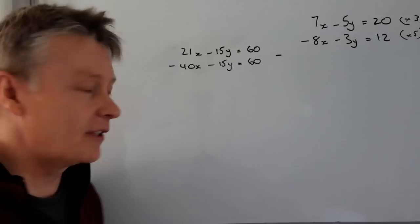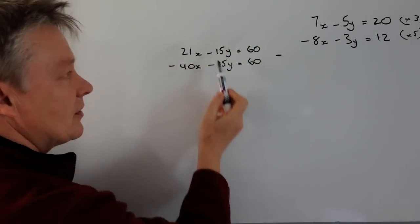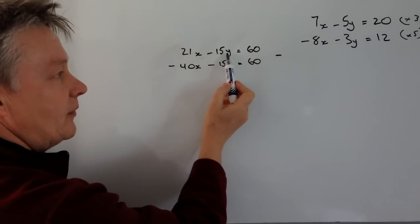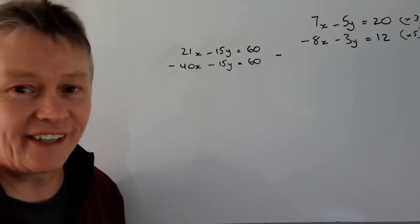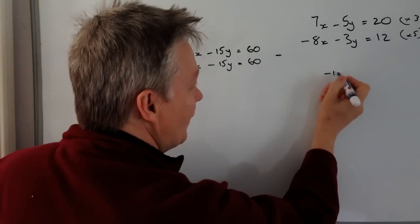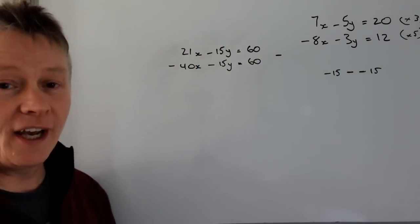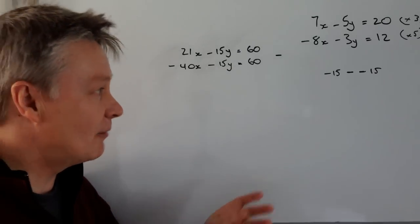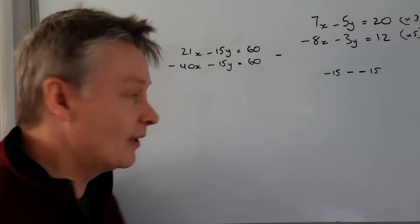I'm going to be very careful with what we're going to do here, because if we look at this, if you just ignore everything else, so I've got minus 15y minus minus 15y. So it's minus 15 minus minus 15. Well, as you might be aware, that when you get two minuses together, it becomes a plus.